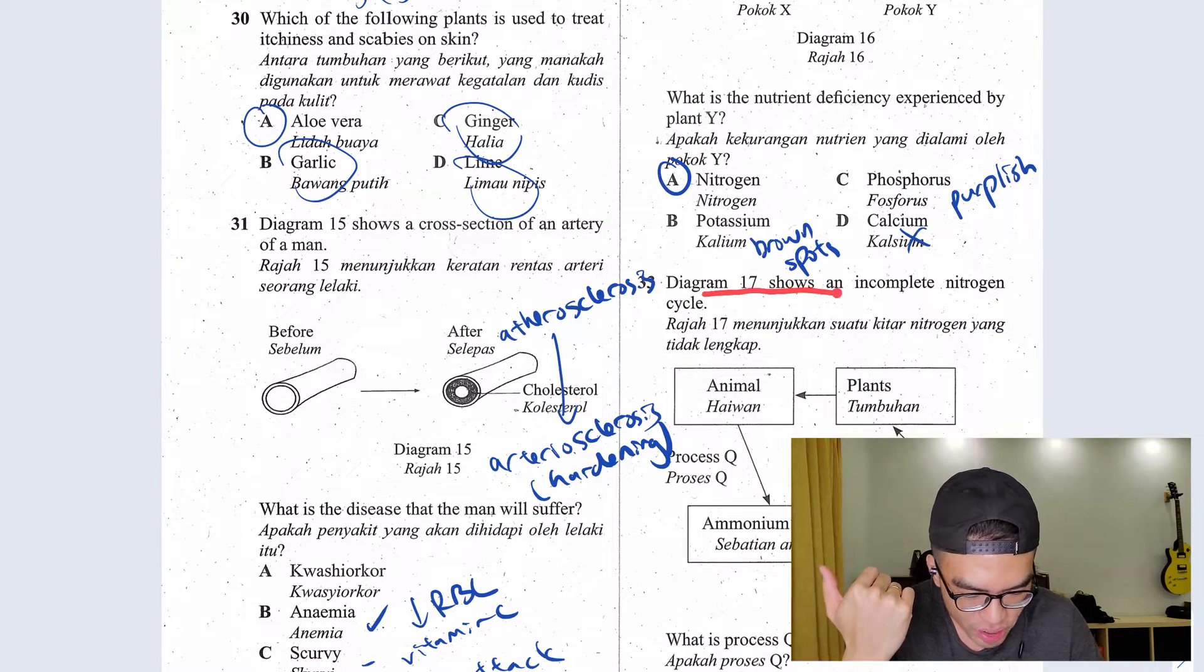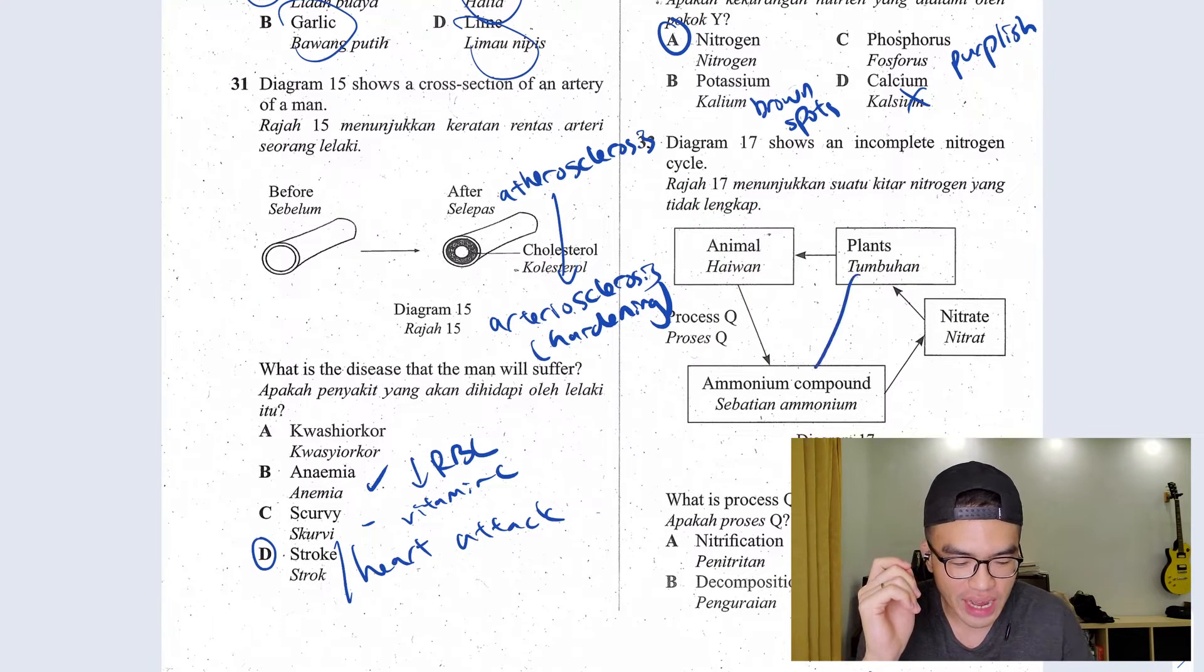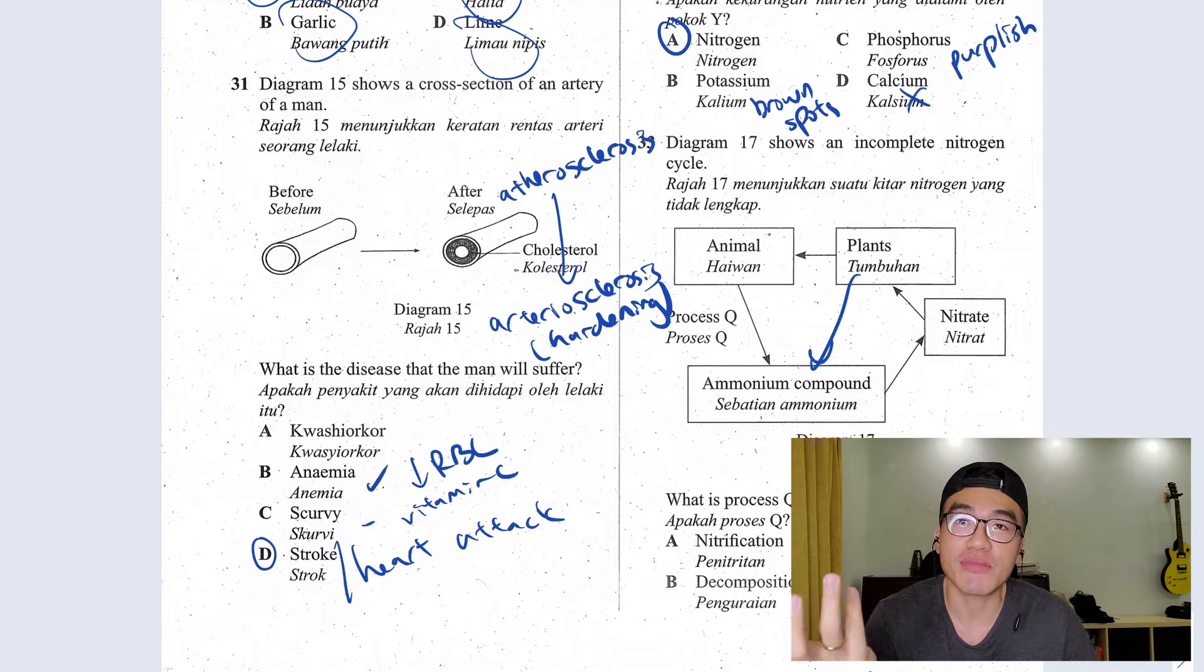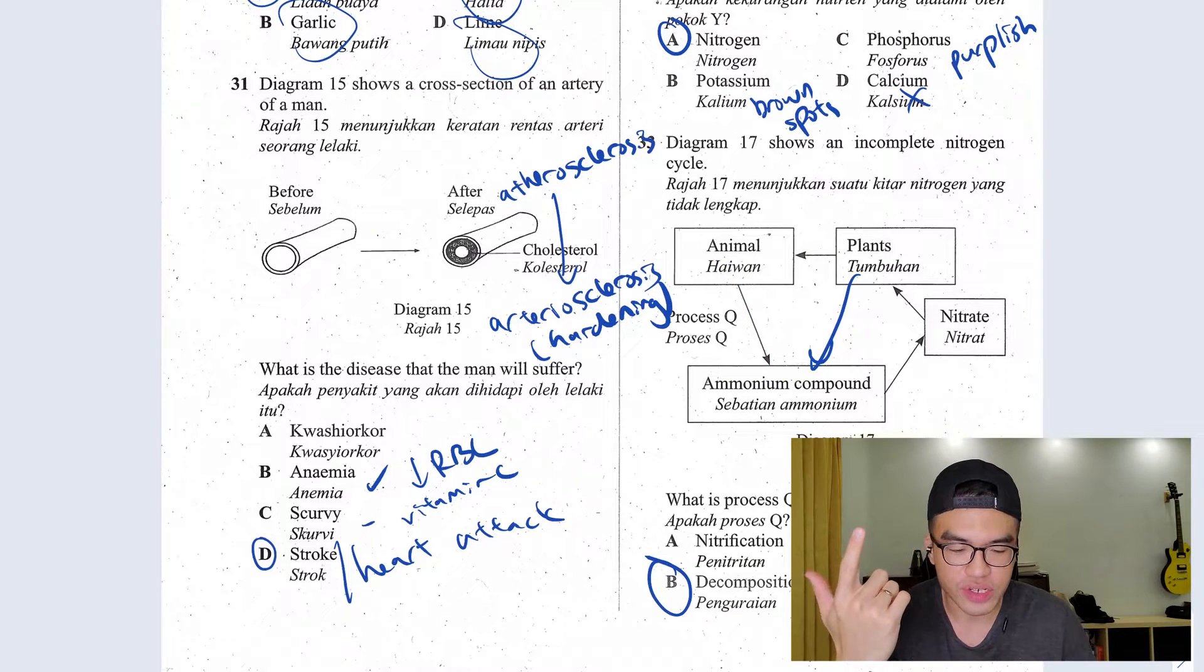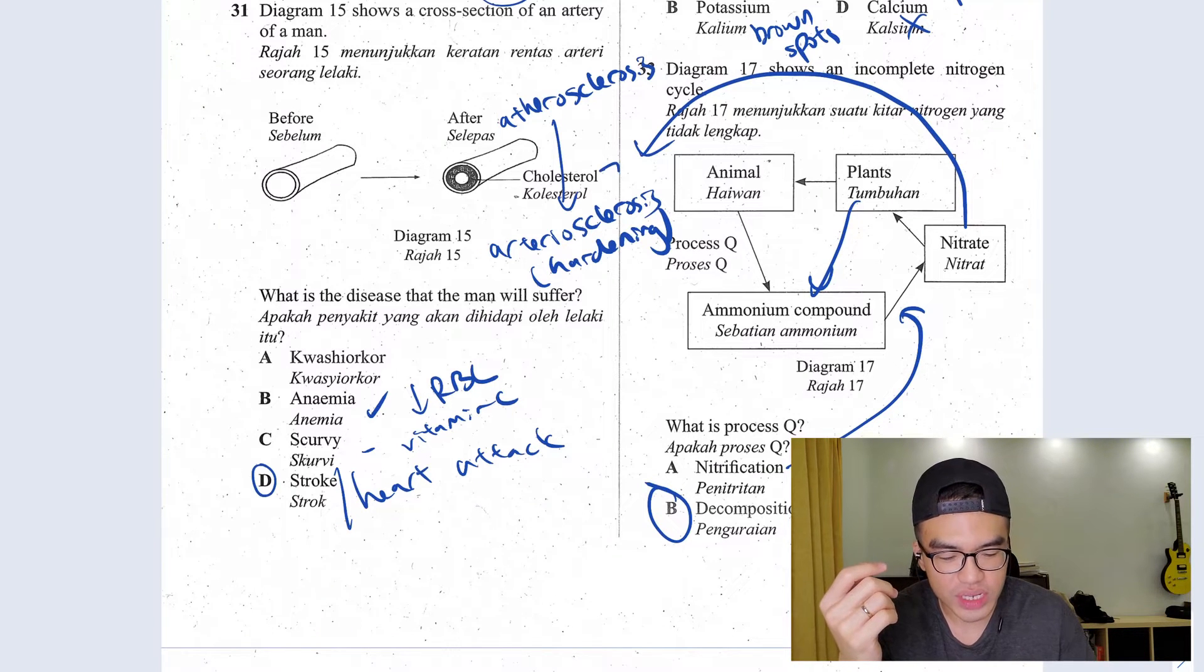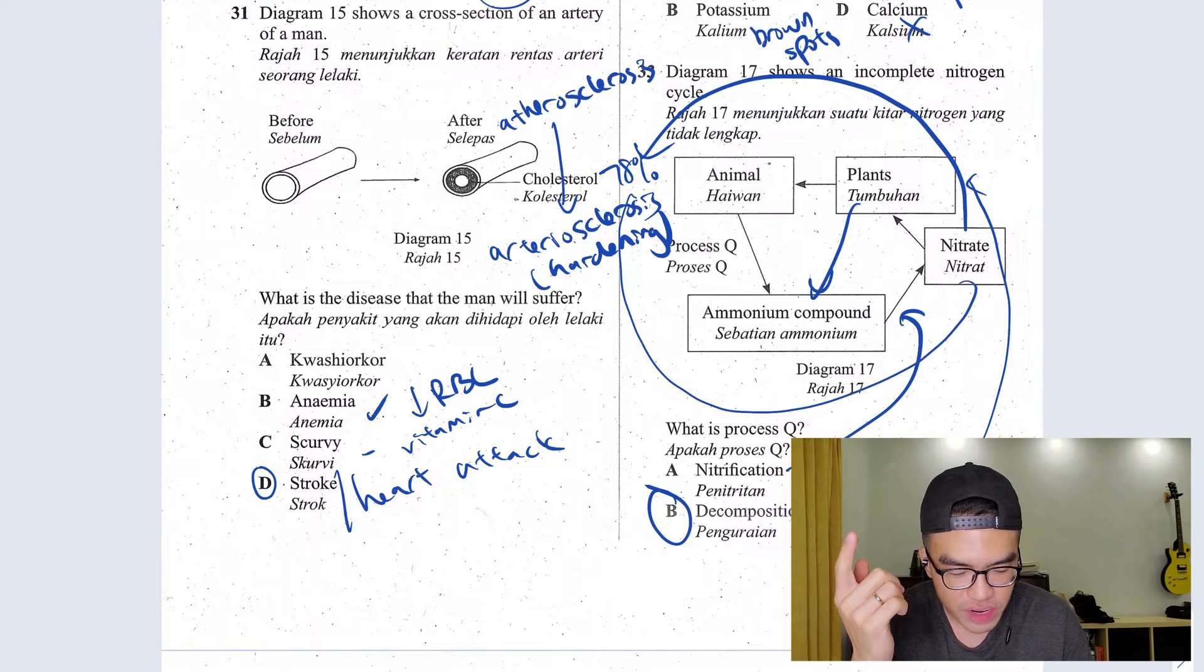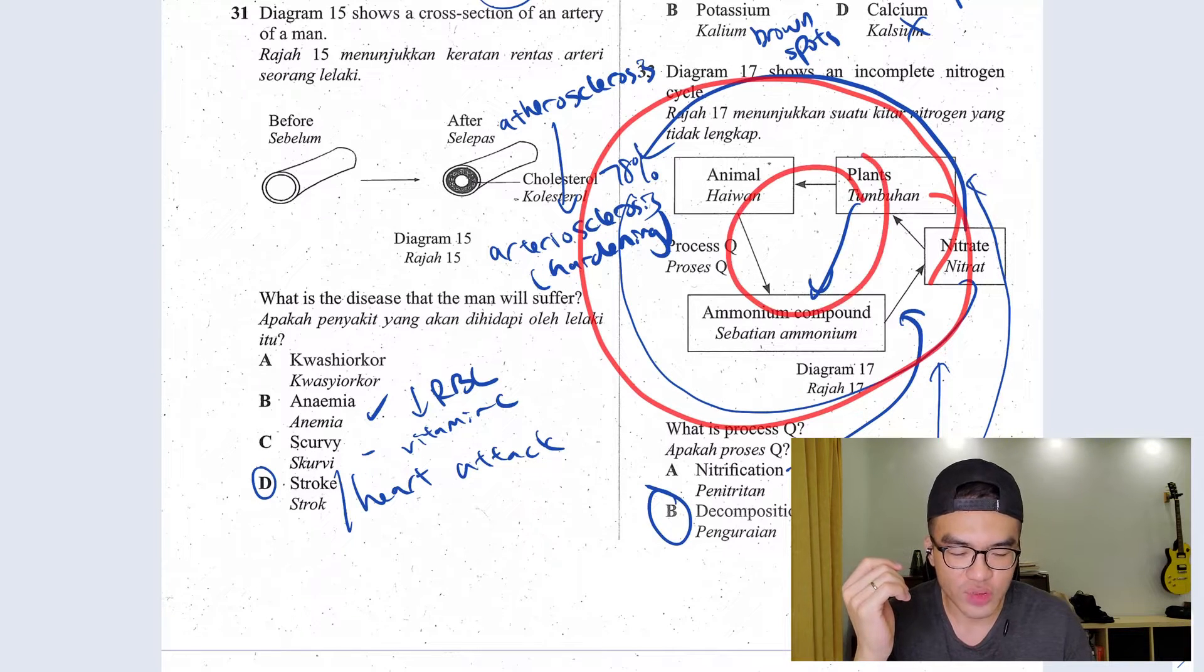Question 33, diagram 17 shows an incomplete nitrogen cycle. When you have plants eaten by animals, when animals or plants they die, they become ammonium and of course this ammonium will be converted into nitrate before they are being taken up by plants again. So what is process Q? When animals die, what do they go through? They will go through decomposition. This is not even nitrogen cycle. Nitrification is this here, when you're changing ammonium into nitrate. So what is denitrification and nitrogen fixation? They work in opposite way. You convert some of the nitrate back into the 78% in your atmosphere. That would be your denitrification and when you convert this 78% of nitrogen into the soil become nitrate, this is what we call nitrogen fixation.